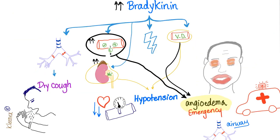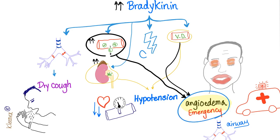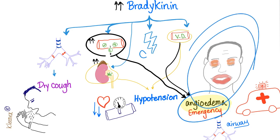Here is a visual mnemonic for bradykinin's effects: bronchoconstriction, dry cough, increased vessel permeability leading to angioedema, natriuresis leading to hypotension, vasodilation leading to hypotension, and pain — especially chronic pain. Angioedema is an emergency. Don't ever forget that.